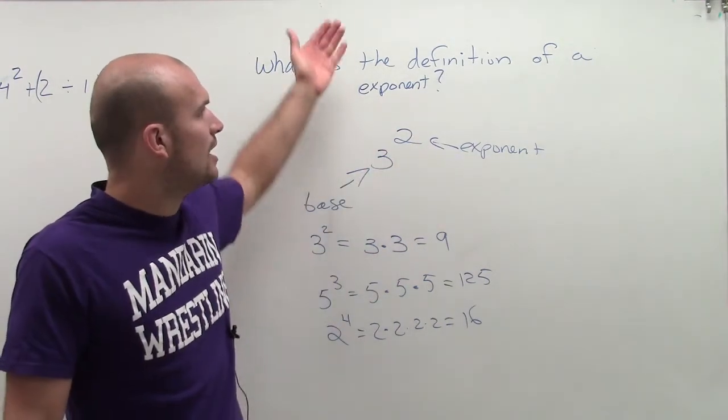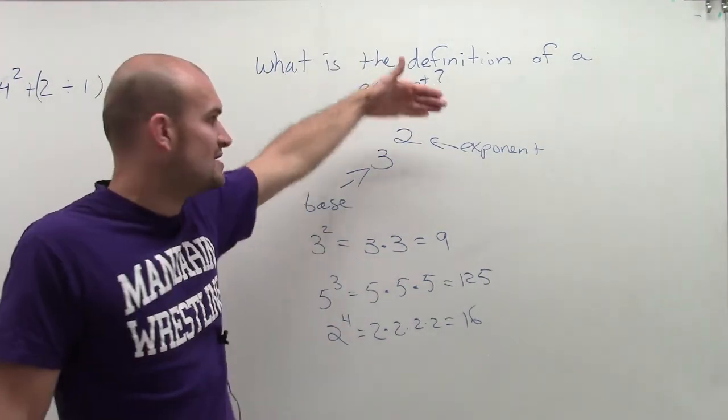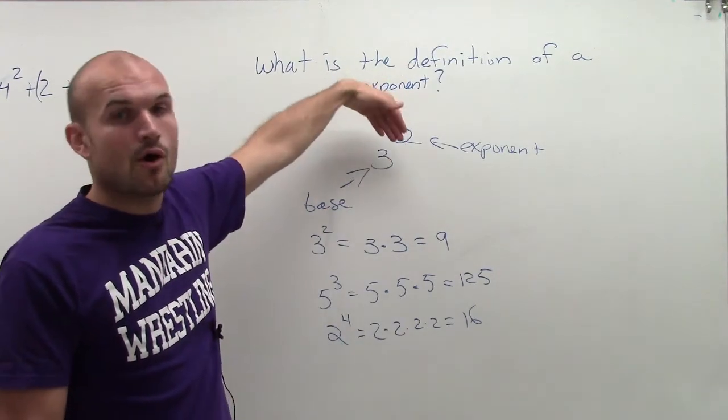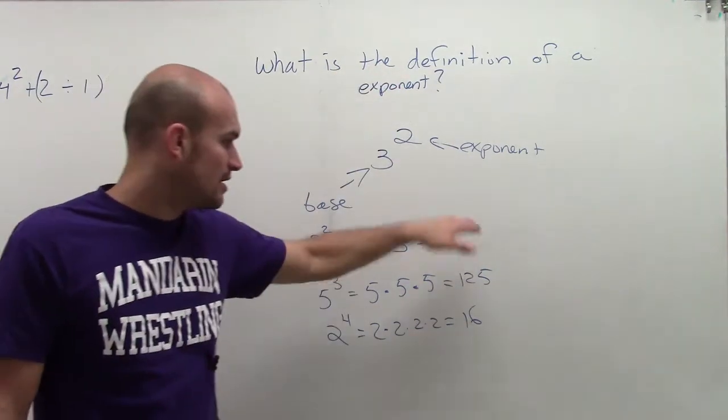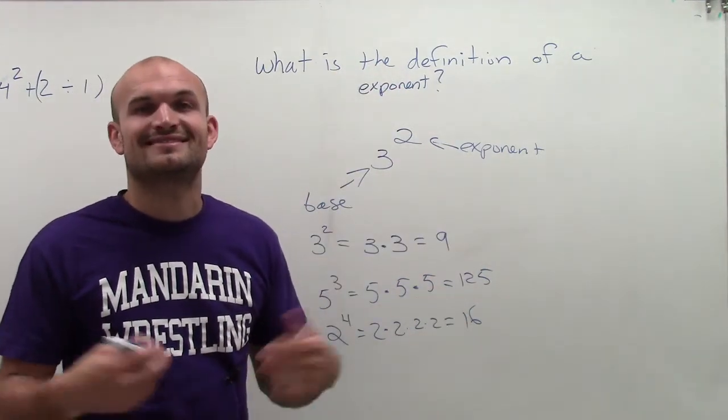The definition of an exponent is how many times you're going to multiply your base, or as a factor, how many times the factor is going to be multiplied by itself to get your end result simplified. There we go.